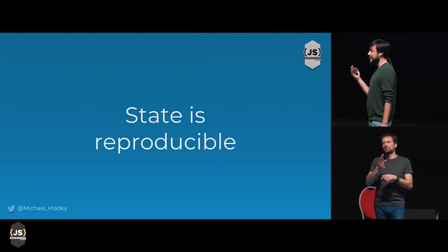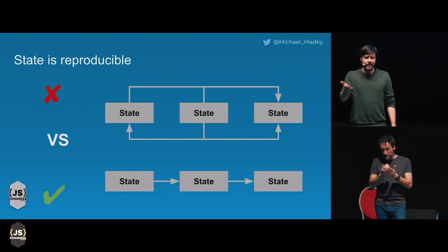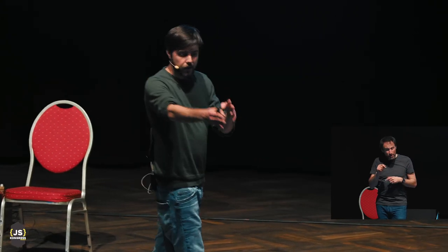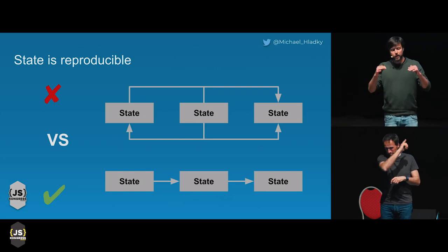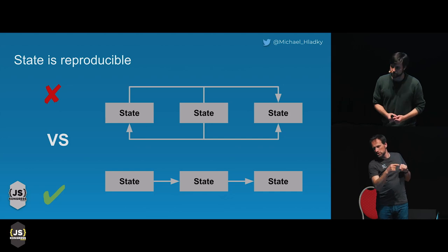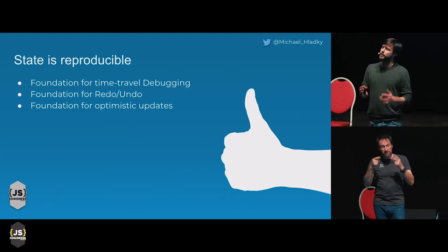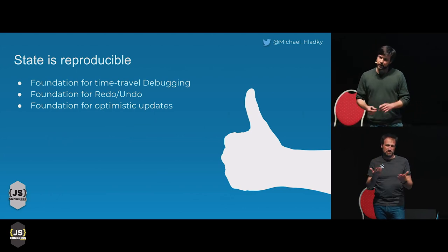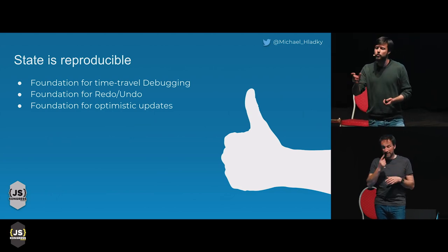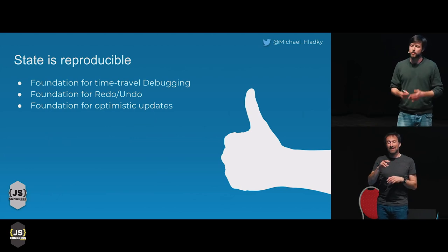I've often mentioned that state is reproducible. Reproducible means that any state change I introduce to my application is revertible — I can recalculate any single step in those changes. The first diagram shows you a state change that is not revertible. Compared to the right diagram where you can step forward and backward to every single change made to the state. Why is reproducibility so important? Reproducibility is the foundation for a lot of cool features: time travel debugging is only possible if you have reproducible state, it's very easy to implement redo-undo logic, and it is the foundation for optimistic updates.